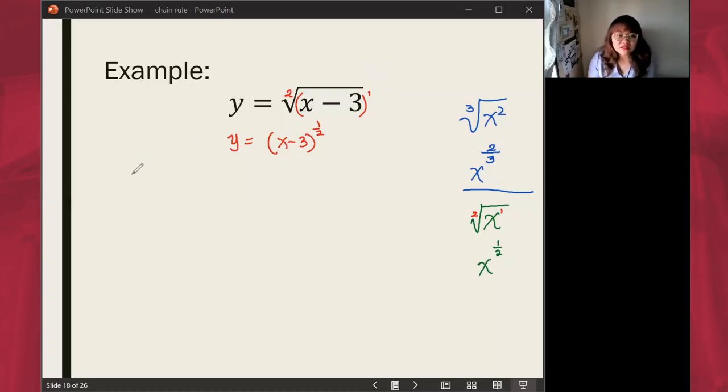So let's get the formula of chain rule. y prime is equal to n times u prime times u raised to n minus 1.